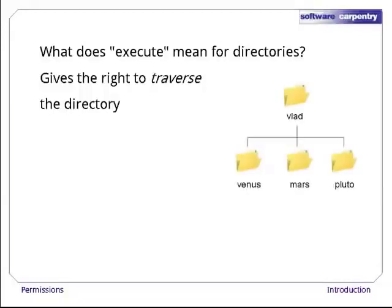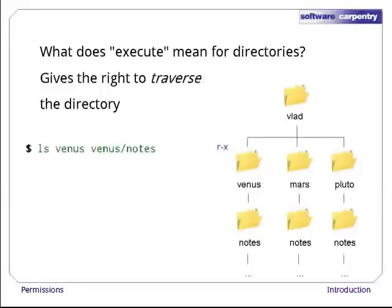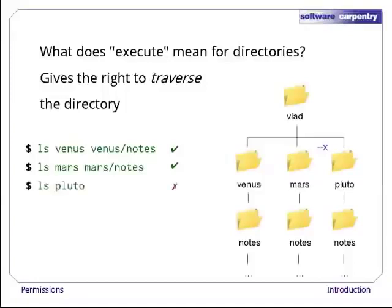Vlad's home directory has three sub-directories called Venus, Mars, and Pluto, each with a sub-directory called Notes containing various files. If a user's permissions on Venus are r-x, then she can see the contents of Venus and Venus/notes using ls. If her permissions on Mars are just r--, she is allowed to read the contents of both Mars and Mars/notes. But if her permissions on Pluto are only --x, she cannot see what's in the Pluto directory. If she tries to look in Pluto/notes, though, the computer will let her do that — she's allowed to go through Pluto, but not look at what's there.